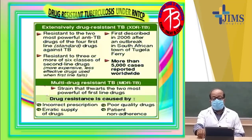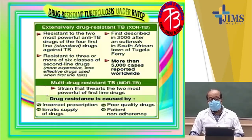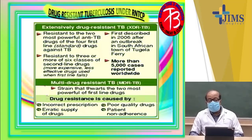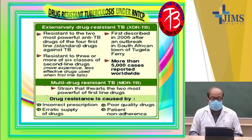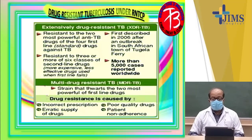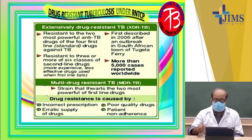Drug-resistant tuberculosis under RNTCP: extensively drug-resistant TB has resistance to the two most powerful anti-tuberculous drugs out of the first-line drug treatment, described in 2006, and resistant to 3 or more classes of second-line drugs. Around 5,000 such cases have been reported worldwide. Drug resistance is generally caused by incorrect prescriptions, erratic supply of drugs, poor quality of drugs, and patient non-compliance.